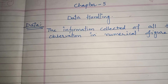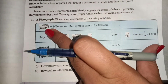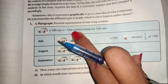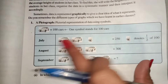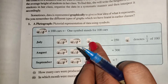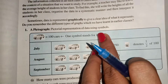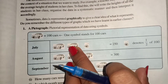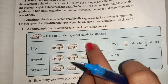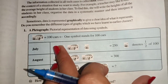A pictograph is a pictorial representation of data using symbols. Here, one car symbol is equal to 100 cars, meaning one symbol stands for 100 cars. In July month, there are one and a half symbols, which means 250 cars. One car shows 100, the second car shows 100, and the half symbol denotes 50, so 250 cars in July month.